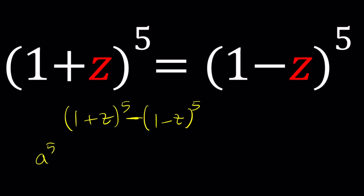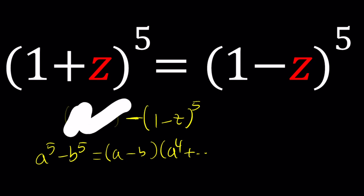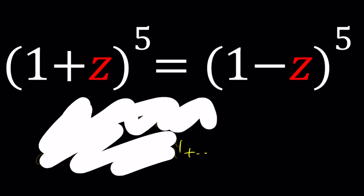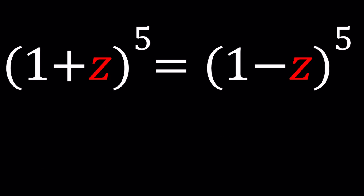Hopefully you know what it is. A to the 5th minus B to the 5th can be written as A minus B multiplied by A to the 4th and so on — there are a few more terms. We can set it equal to 0 and go from there. But there are obviously easier ways to do this, so let's not go with that first method.